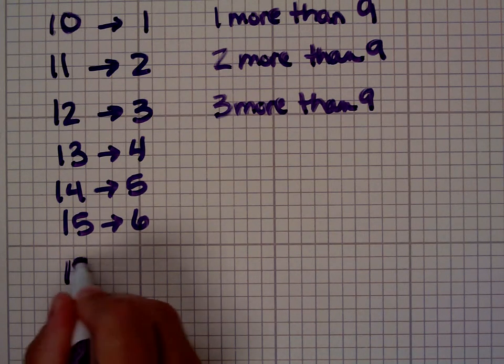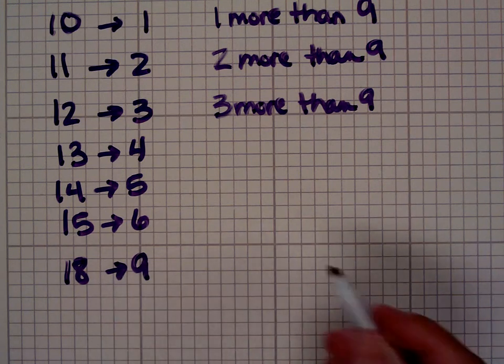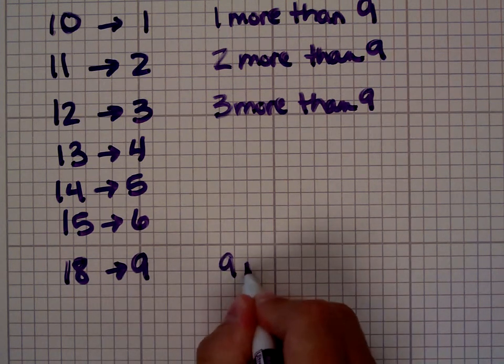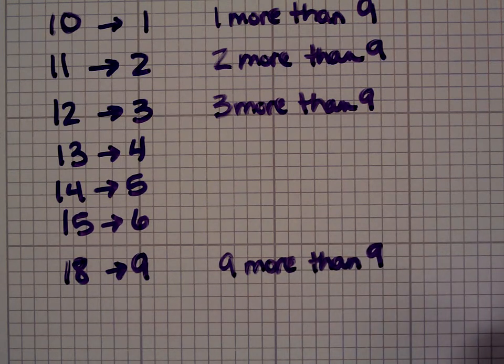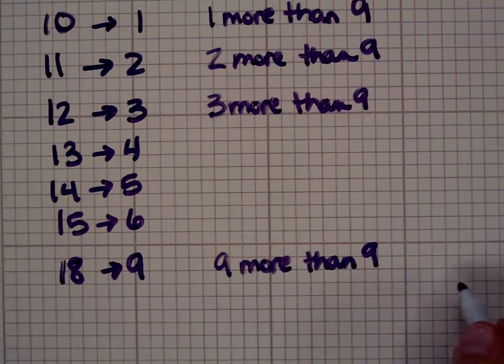Now if I look at 18, that has a digital root of 9. 18 is 9 more than 9. If it has a digital root of 9, the remainder is actually 0, because we don't have 0 as a digital root. Let's see if that's correct.